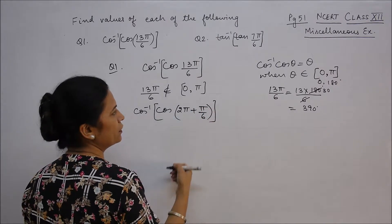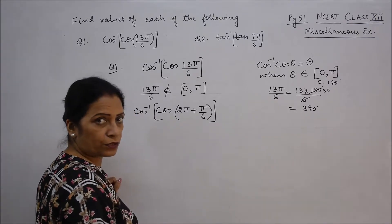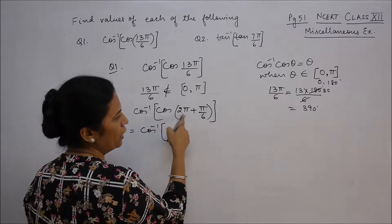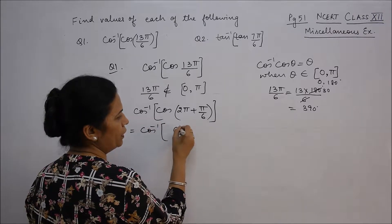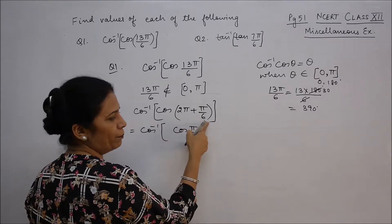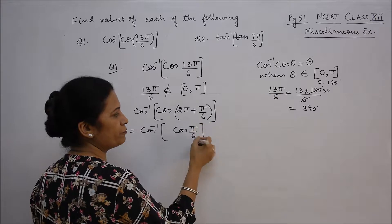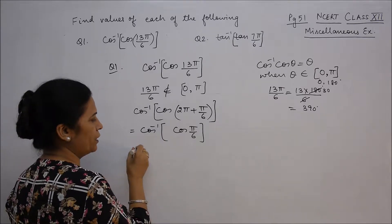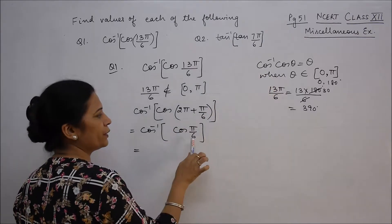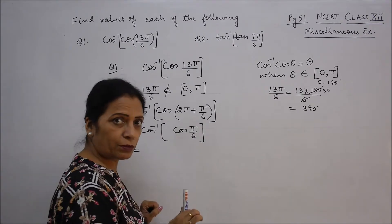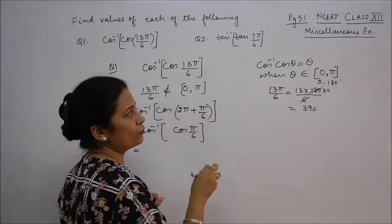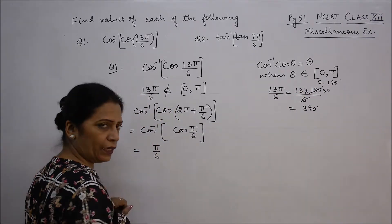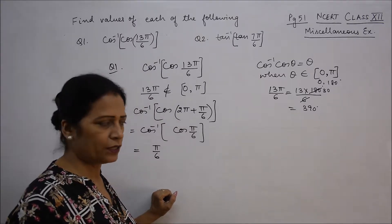So this is cos inverse cos, the ratio of cos will remain as it is. So 2π plus π/6. And we've seen this is in the first quadrant. In the first quadrant all trigonometric ratios are positive, we have seen that. So cos of 2π plus π/6, which is π/6. Now because it is in the principal branch, it will be directly written as π/6.